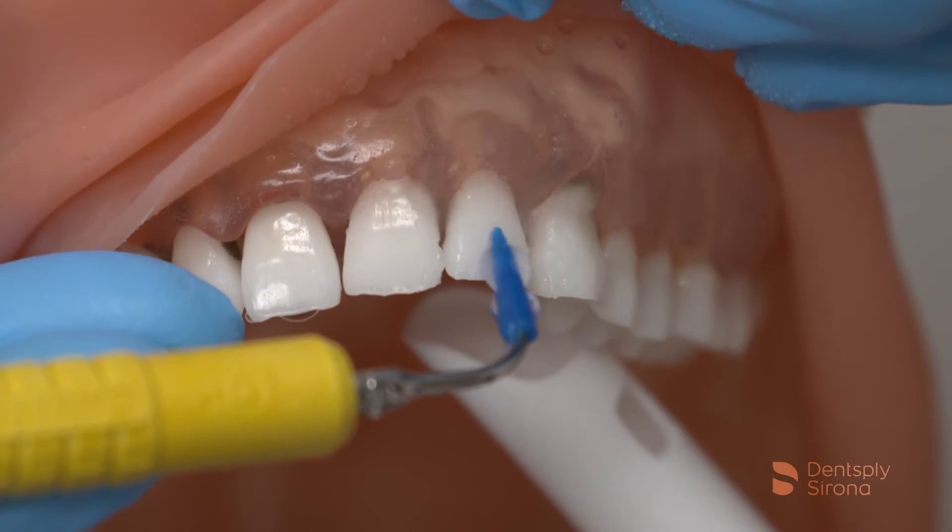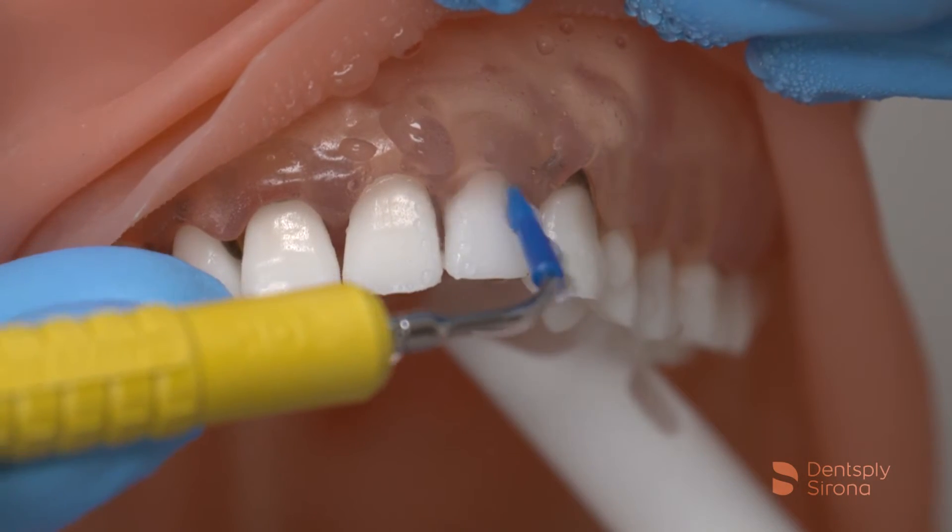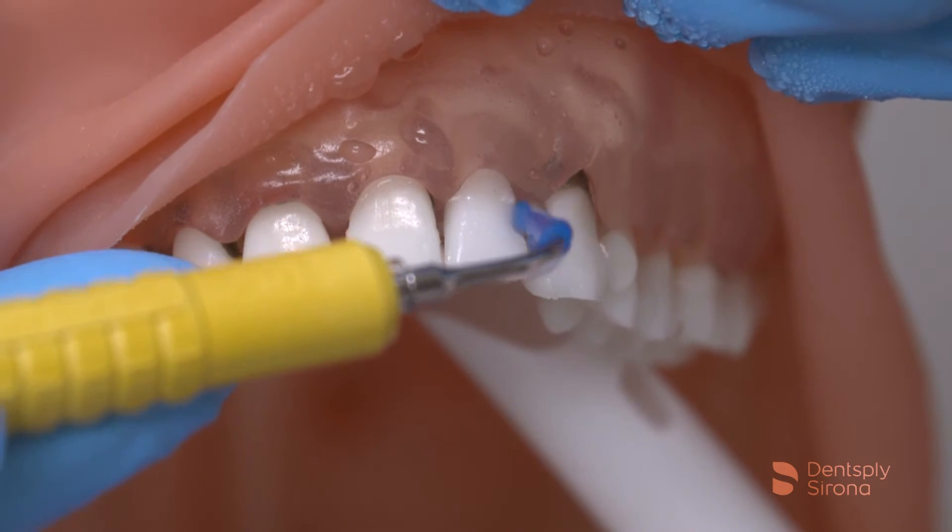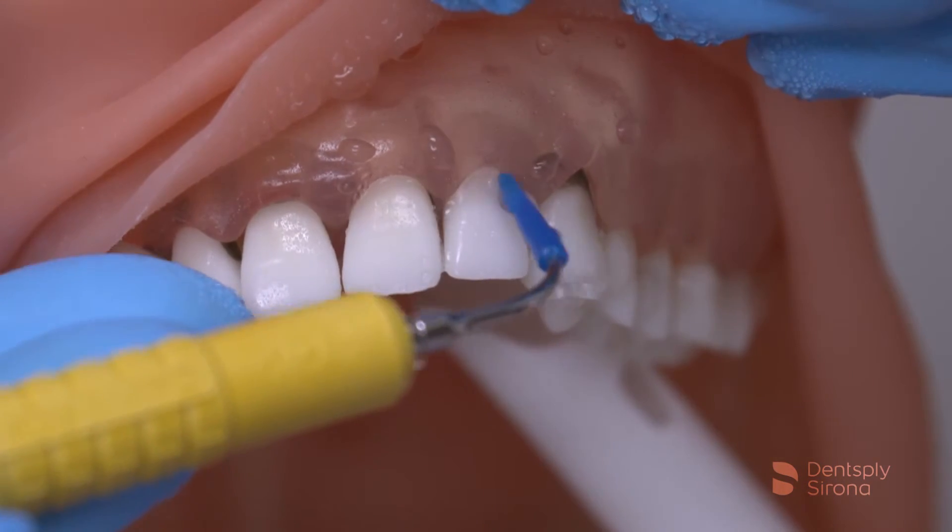Dental implants and their titanium surface need additional consideration when choosing the proper debridement instrument. The sulcular environment and the mucosal seal is more fragile than the normal tooth and this requires a gentle approach and care when debriding in the sulcus.